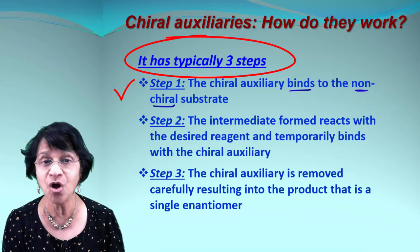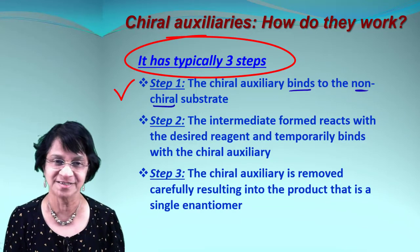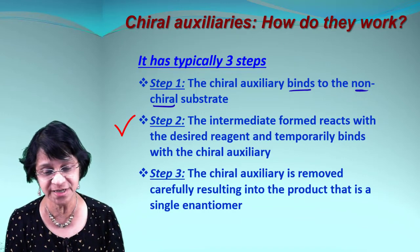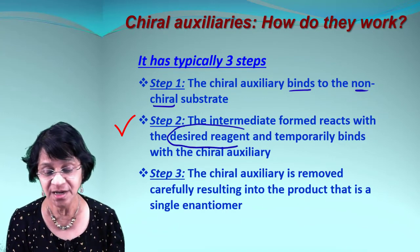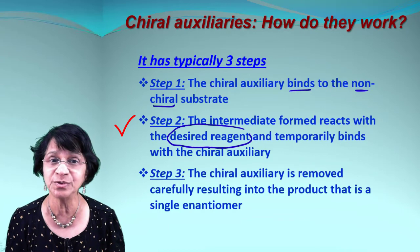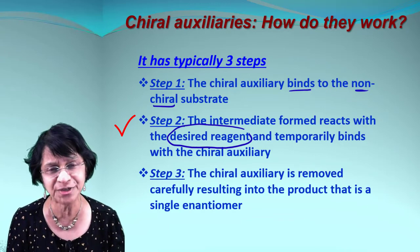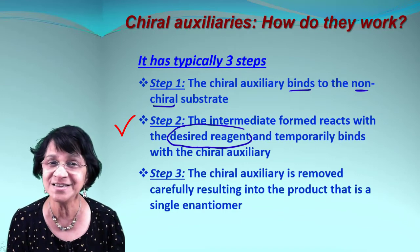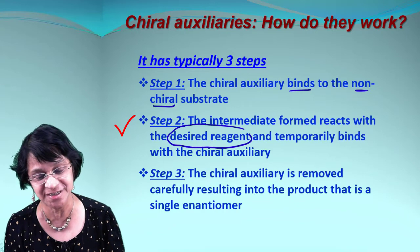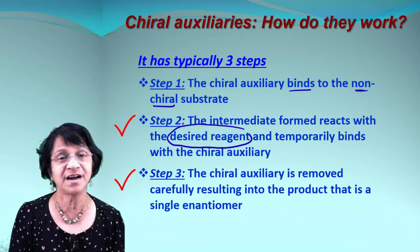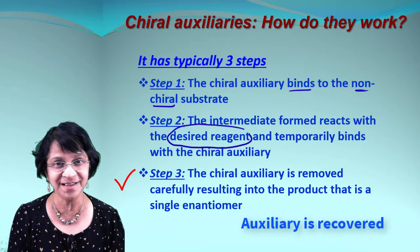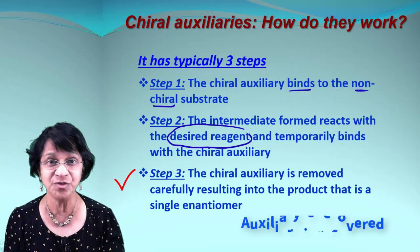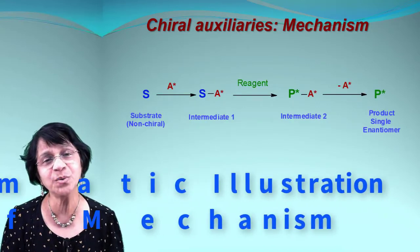In step one, the chiral auxiliary binds to the substrate — and remember, the substrate has to be a non-chiral substance. Step two: the intermediate formed now reacts with a desired reagent, which could be a branch or fragment of the molecule, and it temporarily binds with the chiral auxiliary to give another intermediate. Step three: the chiral auxiliary is removed, resulting in the desired product with correct stereochemistry.